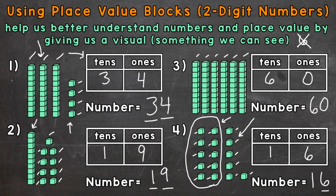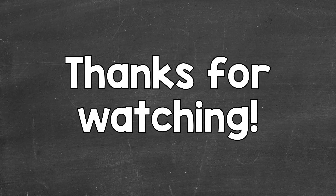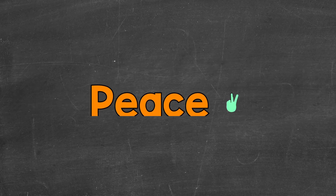Six representing six ones with a value of six, and one representing one group of 10 with a value of 10. So there you have it — that's how you use place value blocks to represent two-digit numbers. I hope that helped. Thanks so much for watching. Until next time, peace.